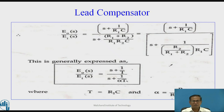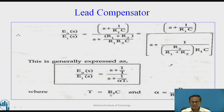Deriving the transfer function for the lead compensator. The transfer function means the Laplace transform of output to the Laplace transform of input. So, e0(s)/ei(s) is equal to (s + 1/R1C) divided by (R1+R2)C. Simplifying this expression, the transfer function becomes e0(s)/ei(s) = (s + 1/T) divided by (s + 1/αT), where T = R1C and α = R2/(R1+R2).